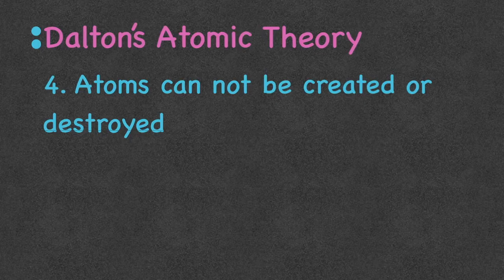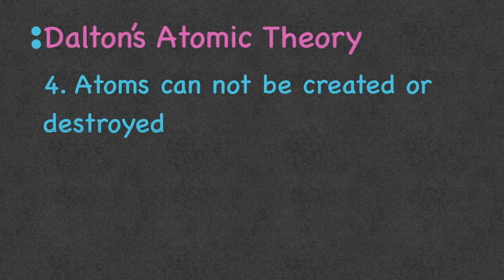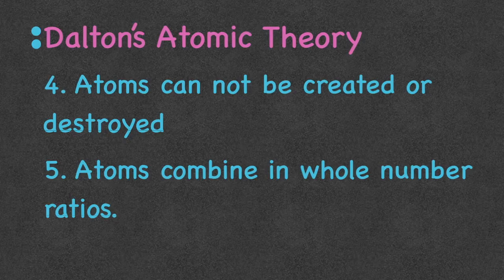The fourth postulate says atoms cannot be created nor destroyed — we can only rearrange atoms. If we want to make a new compound, atoms are going to chemically rearrange, but we're not creating atoms out of the blue and we're not destroying atoms. Even with nuclear fission, the mass is being converted into energy, so there's no loss. And the last postulate says that atoms can bind in whole number ratios.